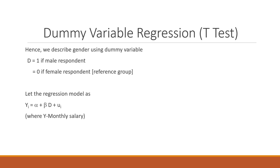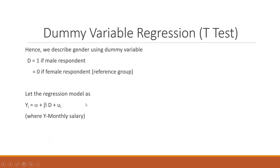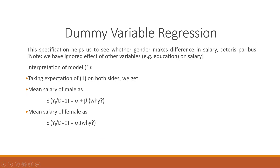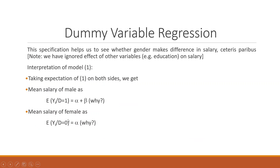In dummy variable regression using the t-test, assume D equals 1 if the respondent is male and 0 if female. Whatever is coded as 0 becomes the reference group, and all comparisons are based on this reference group. Let the regression model be specified as Y = alpha + beta*D + mu_i. When D equals 1, the mean salary of males is alpha plus beta. When D equals 0, Y_i equals alpha, meaning the constant becomes the mean salary of females. Whatever is coded as 0 becomes the reference category, captured by the constant of the equation.